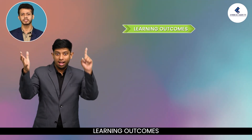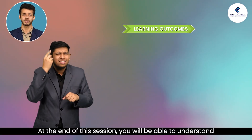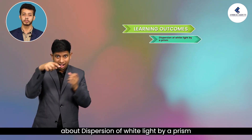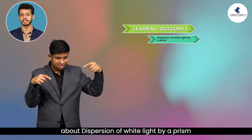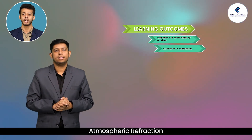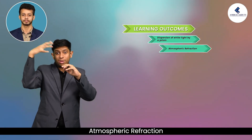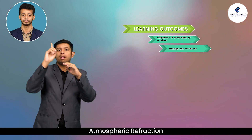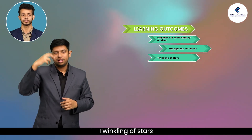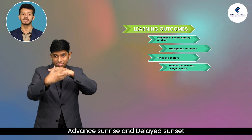Learning Outcomes: At the end of this session, you will be able to understand about dispersion of white light by a prism, atmospheric refraction, twinkling of stars, and advanced sunrise and delayed sunset.